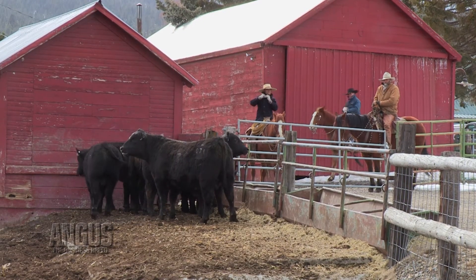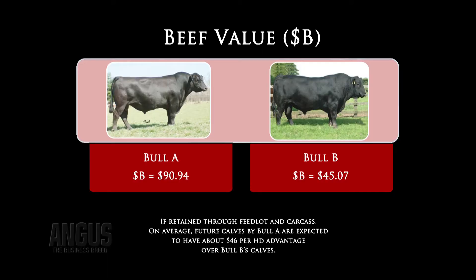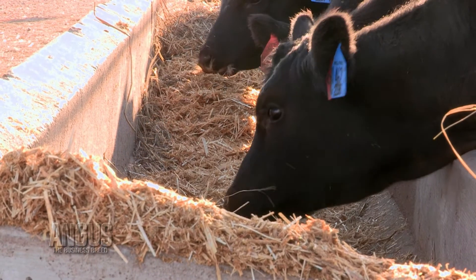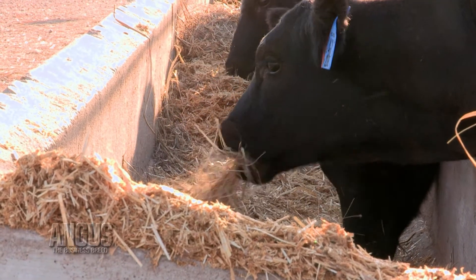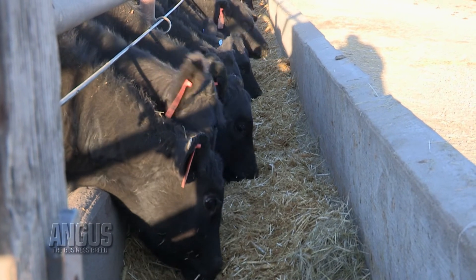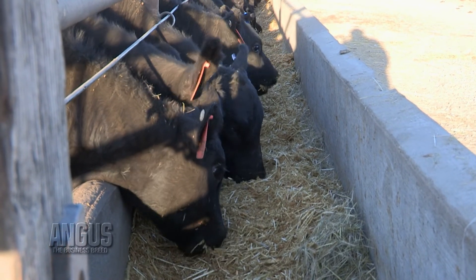Let's walk through an example of two sires with differing dollar B values. Take for example Bull A, who has a dollar B value index of $90.94. Bull B has a dollar B index of $45.07. Remember that the dollar values are reported in dollars and higher numbers are better. So as you do with EPDs, you would simply take the difference between Bull A's dollar B and Bull B's dollar B, and that number is about $46. This is interpreted to mean that if you are retaining ownership of these bulls' calves through the feed yard and onto the packing plant, Bull A's calves should be valued at about $46 more per head than Bull B's calves.